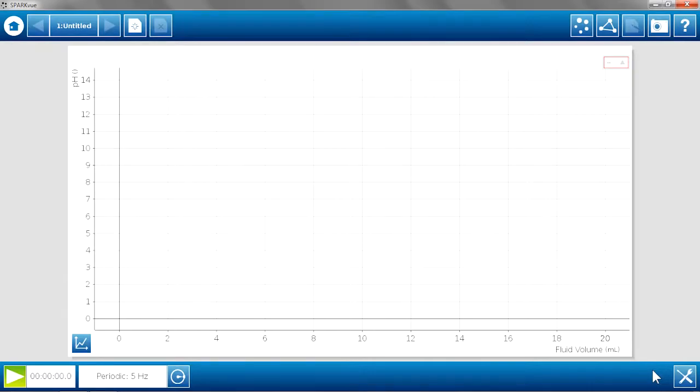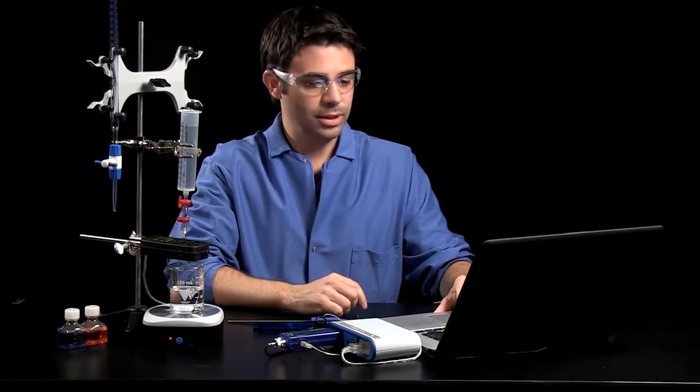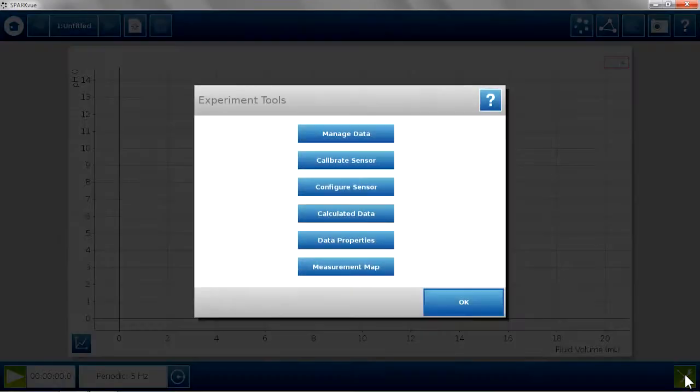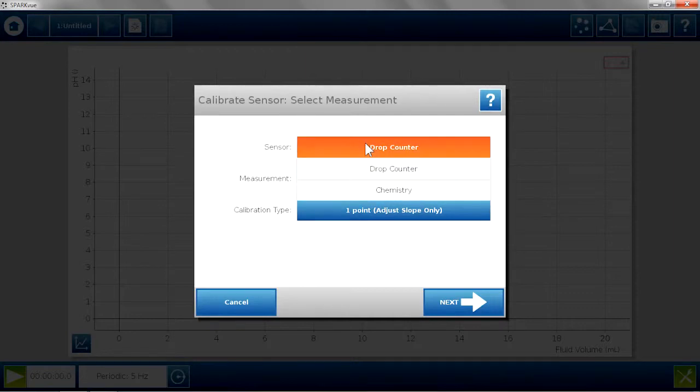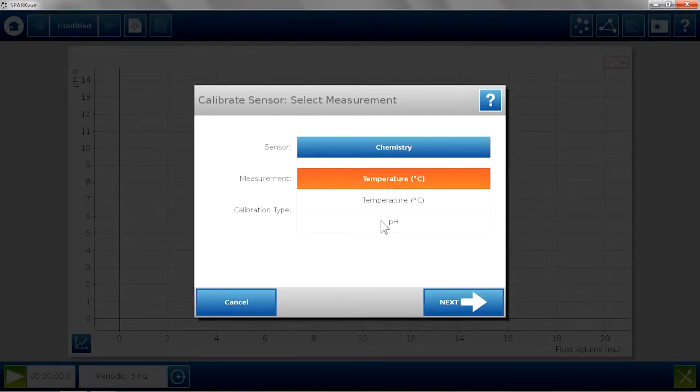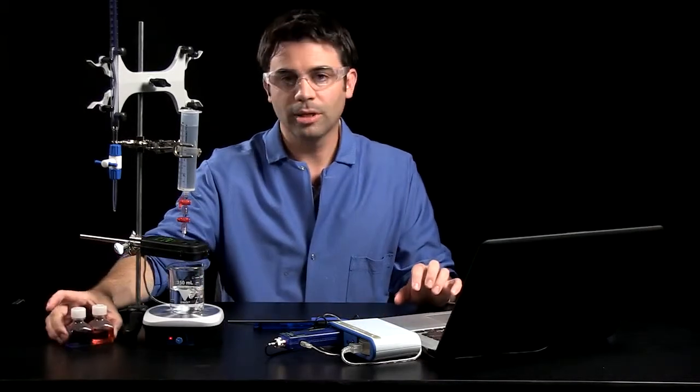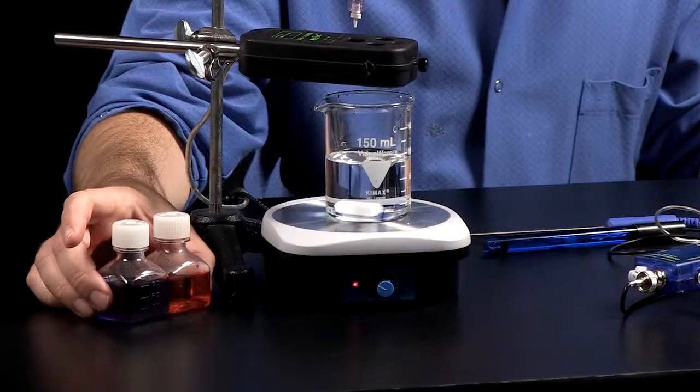Now with any titration, you want to do some calibrations beforehand. You want to calibrate the pH meter, and to calibrate in Spark, you go to the tools, and you can calibrate your sensor. In this case, I can calibrate my chemistry sensor and my pH. Now I already pre-calibrated this with my buffers 4 and 10.